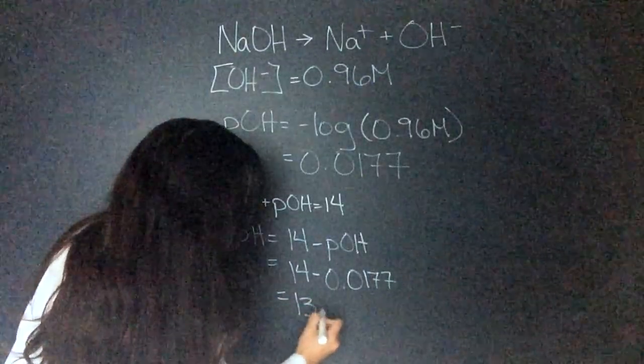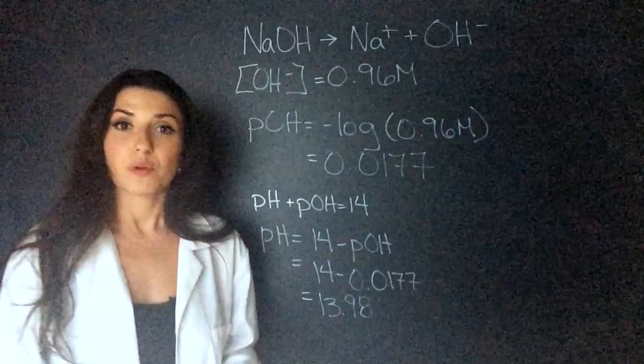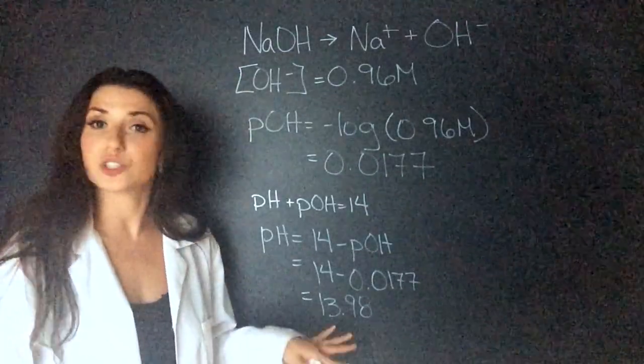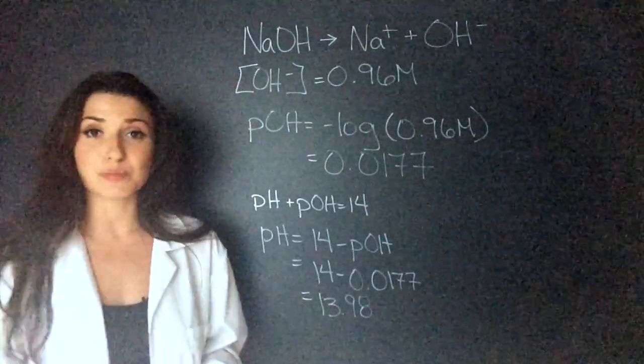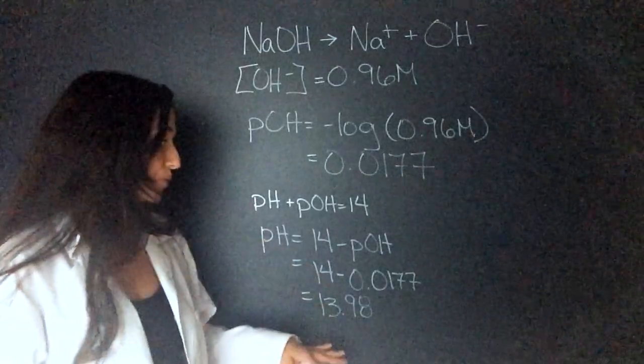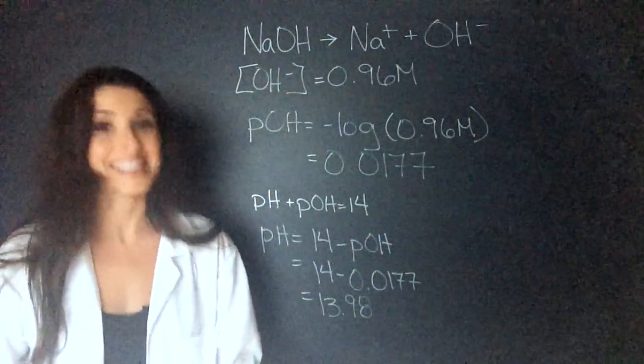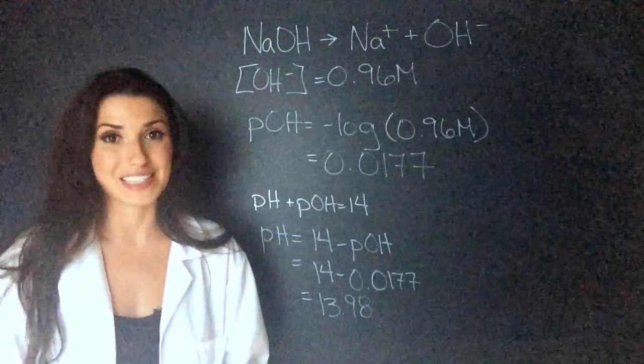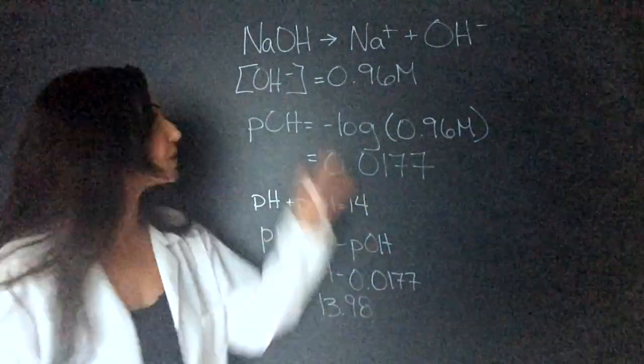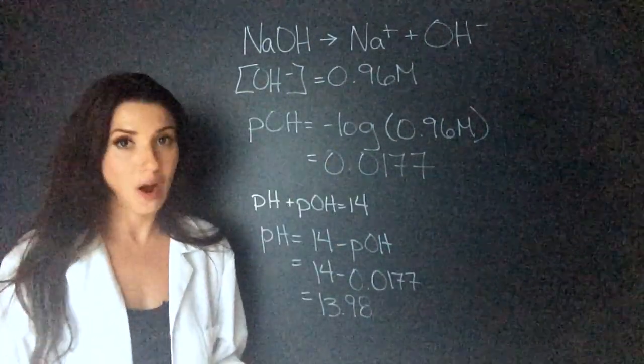Which equals 13.98. Remember pH and POH don't have any units and they have to be between 0 and 14 and we're good, but this is way on the high scale. So it is a very basic solution, which makes sense because sodium hydroxide is a strong base.